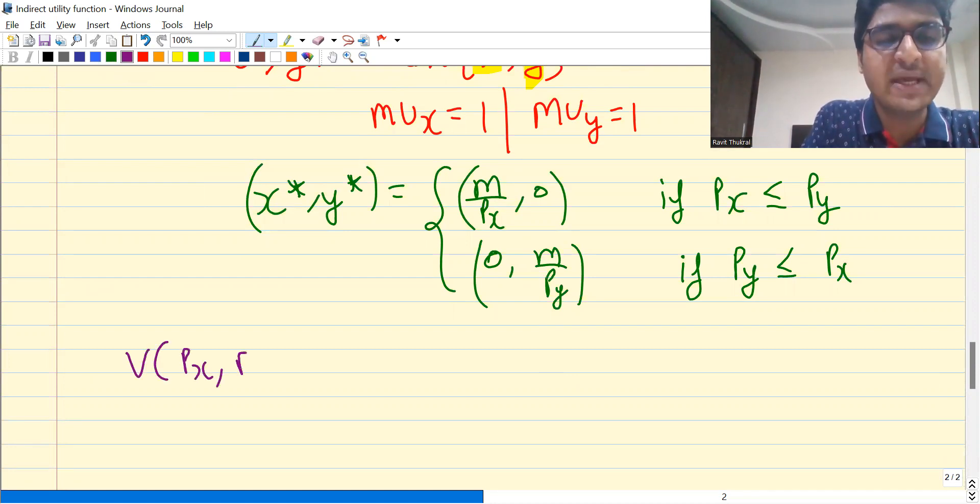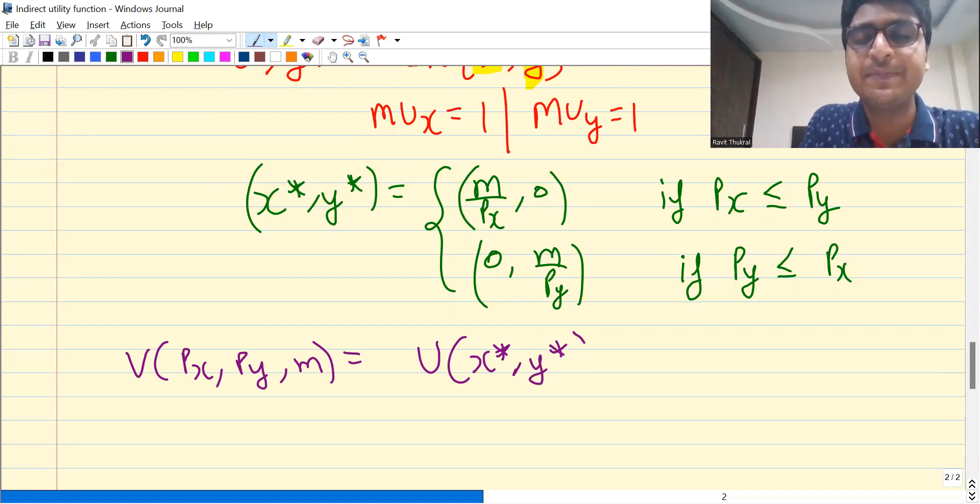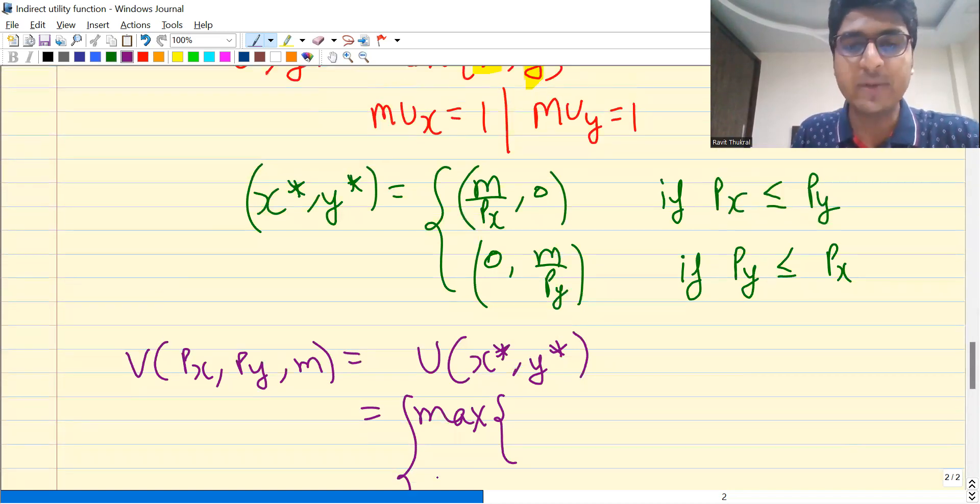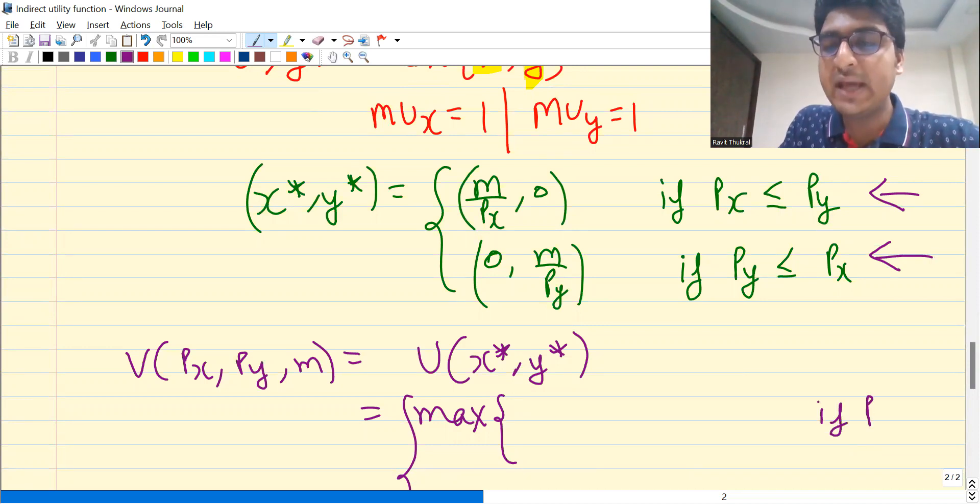V, which is a function of Px, Py and m, is equal to U of X star and Y star, which is equal to max of X star and Y star. So I'll get two cases because my optimal choice has two cases. If Px is less than or equal to Py, then in this case my max function will be max of m by Px and zero.